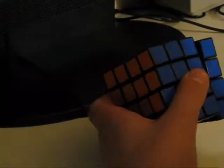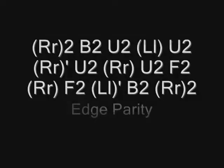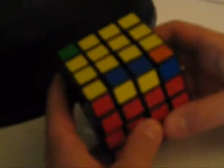I'm going to have slides, and one should play now. So the first parity is when you have only one double edge pair flipped, which can never happen on a 3x3 due to mathematical reasons.